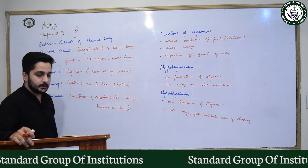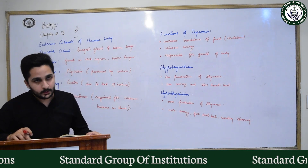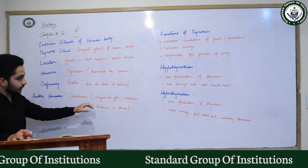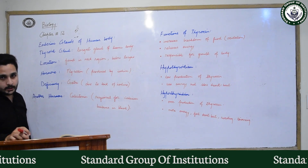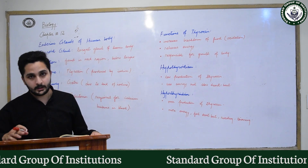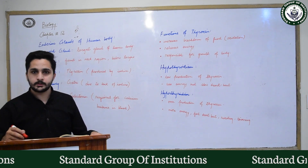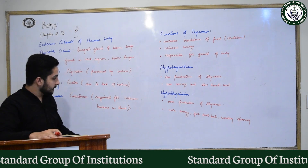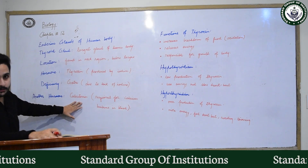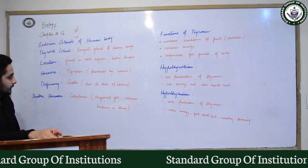Calcitonin is required for calcium balance in blood. If there is too much calcium accumulation in the blood, calcitonin production increases to manage that. Calcitonin helps regulate and balance calcium levels — preventing too much calcium from building up or becoming deficient.